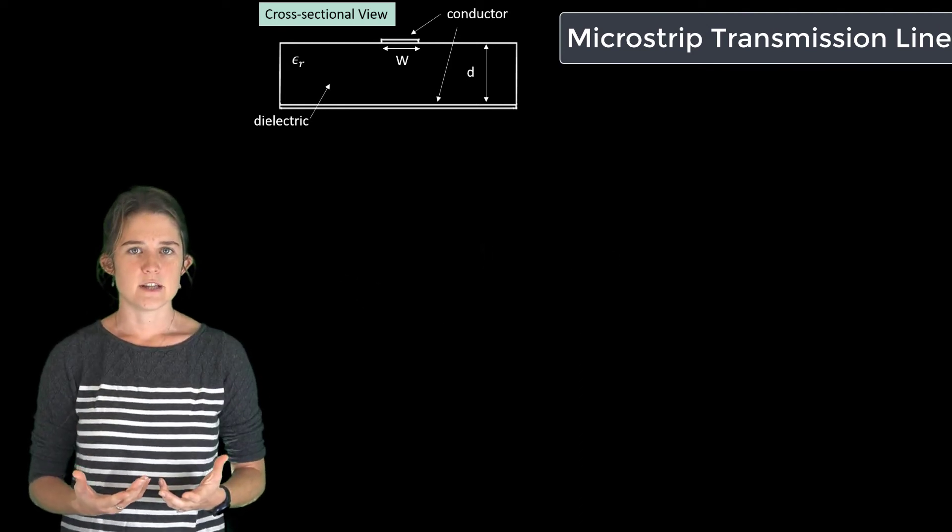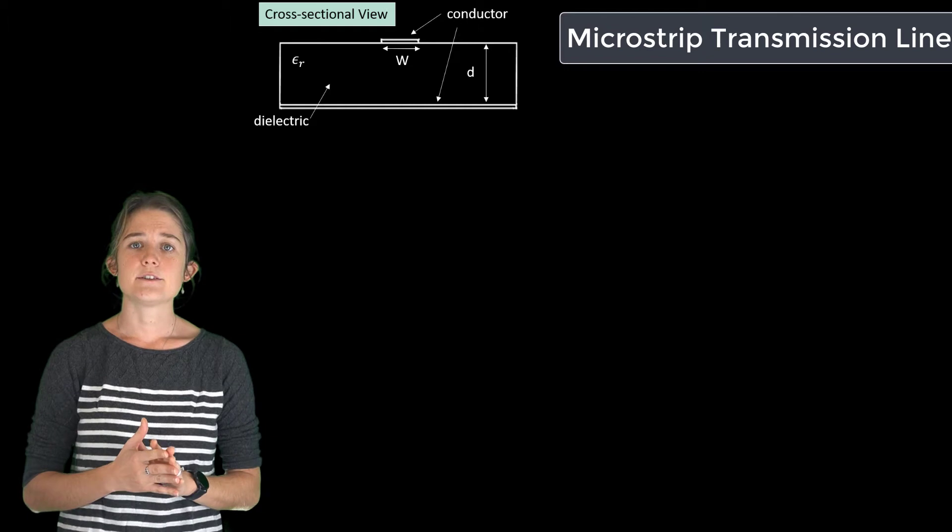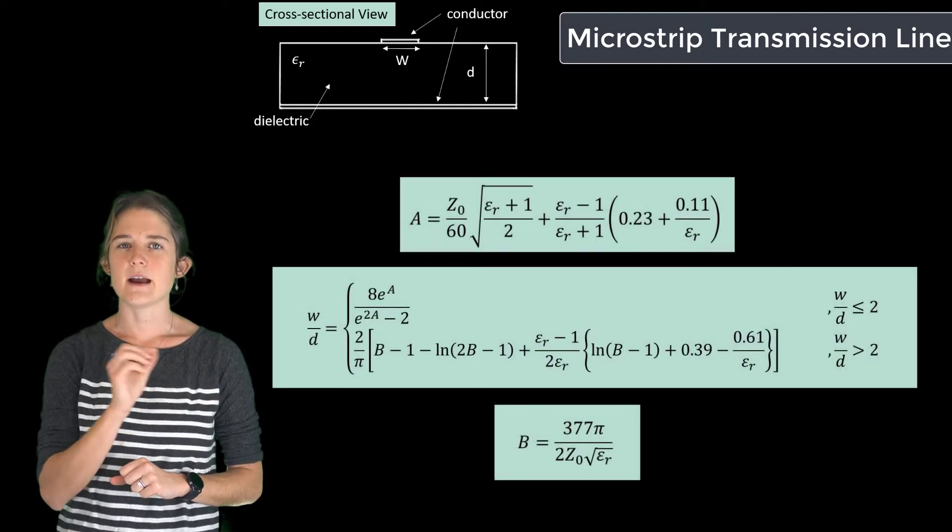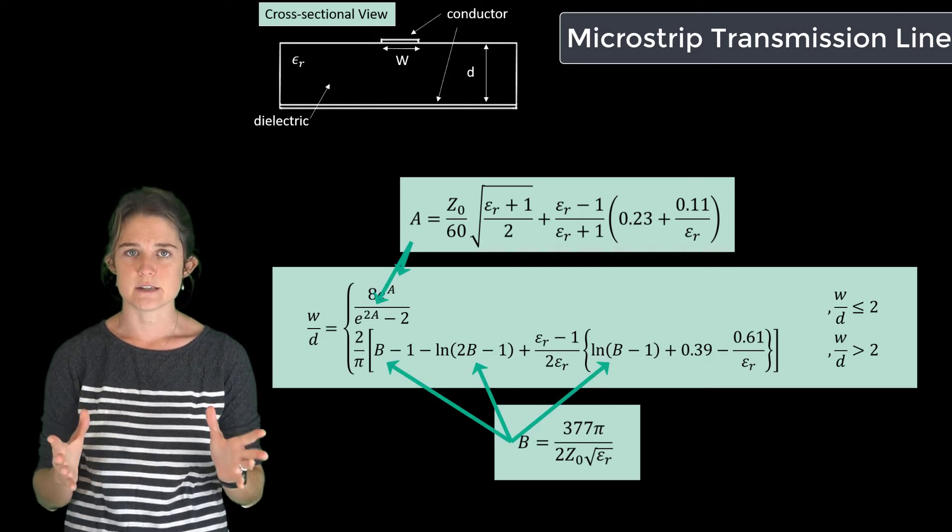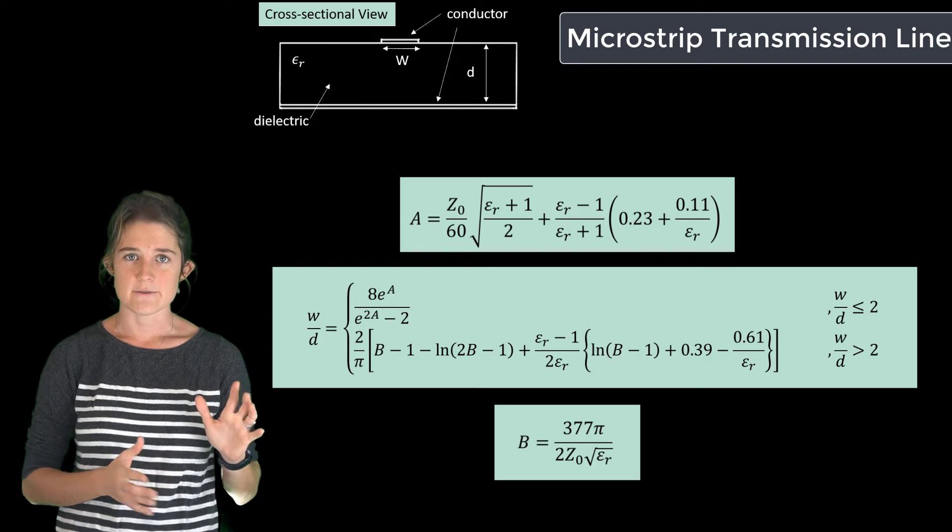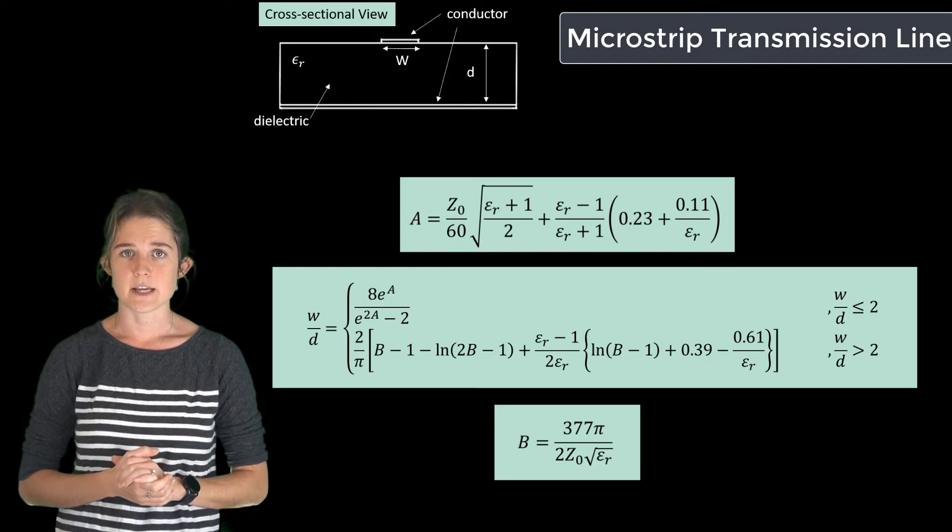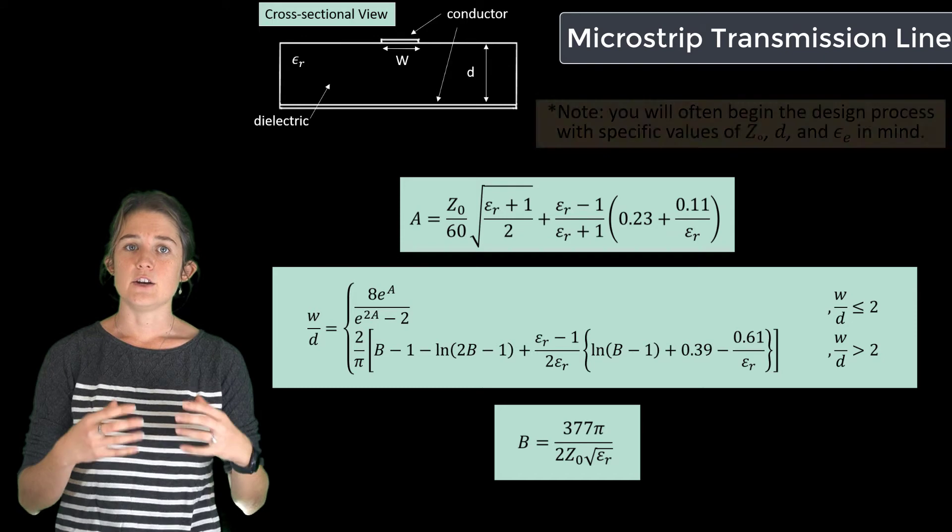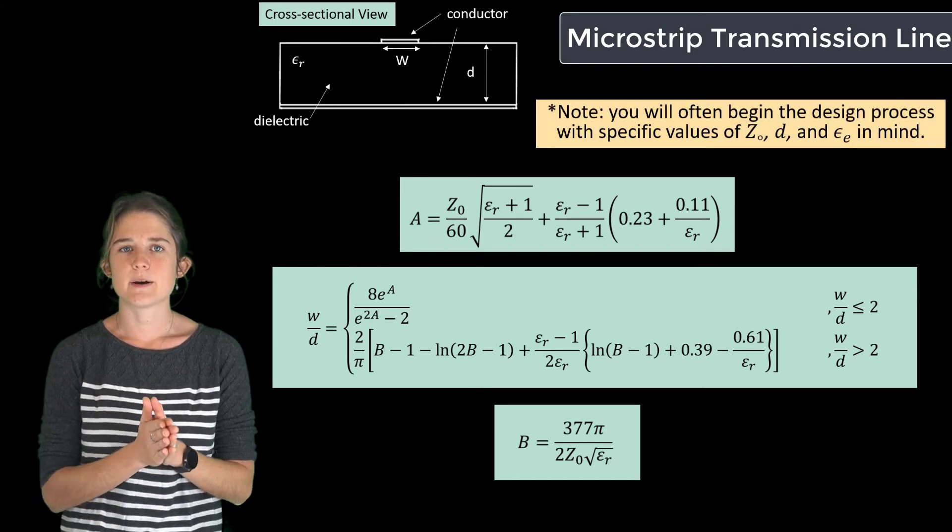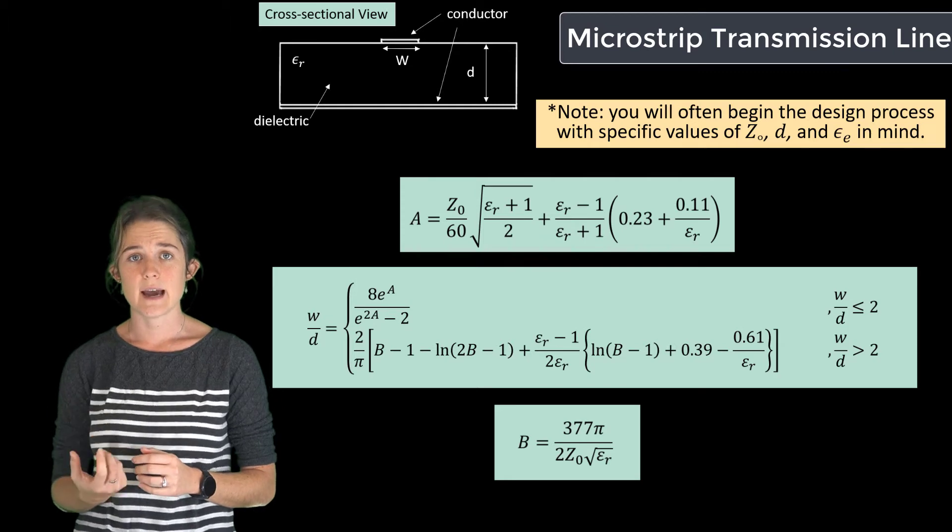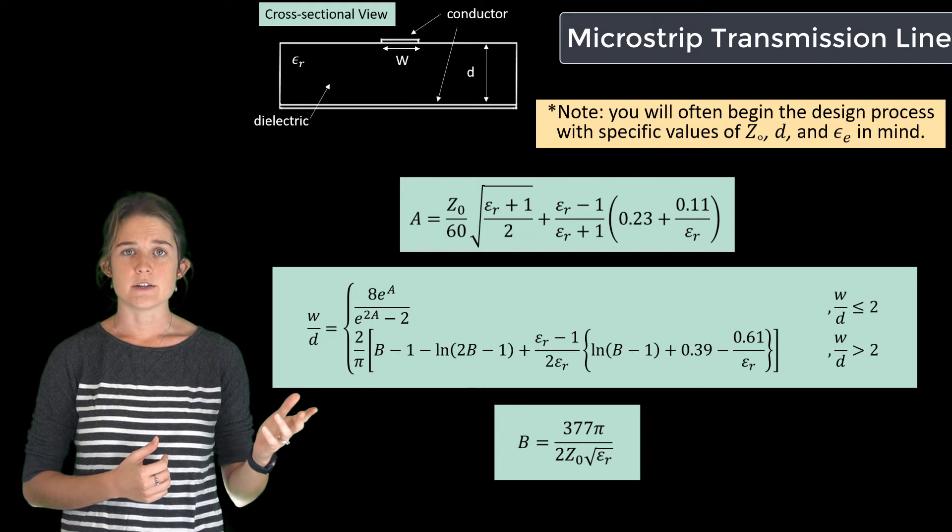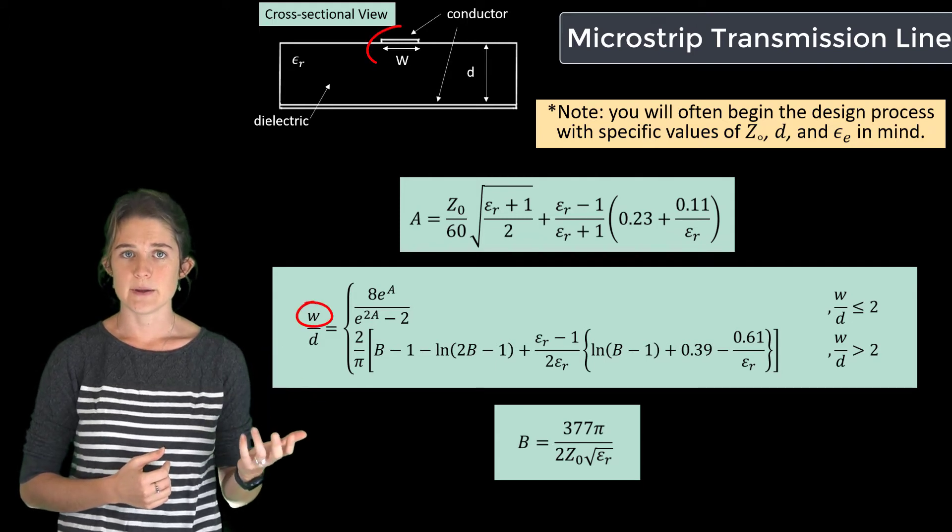If you're given the desired transmission line characteristic impedance and asked to design the microstrip, you will use these equations. Here, A and B are just intermediate values used to simplify the notation. And again, these equations are experimentally derived, so don't worry too much about where the numbers came from. Often, you'll come at this design knowing what values of D and epsilon you want to use, because they'll correspond to some PCB that you already have, or that you can easily obtain. So usually, you'll be using these equations to solve for W, the width of the upper trace.